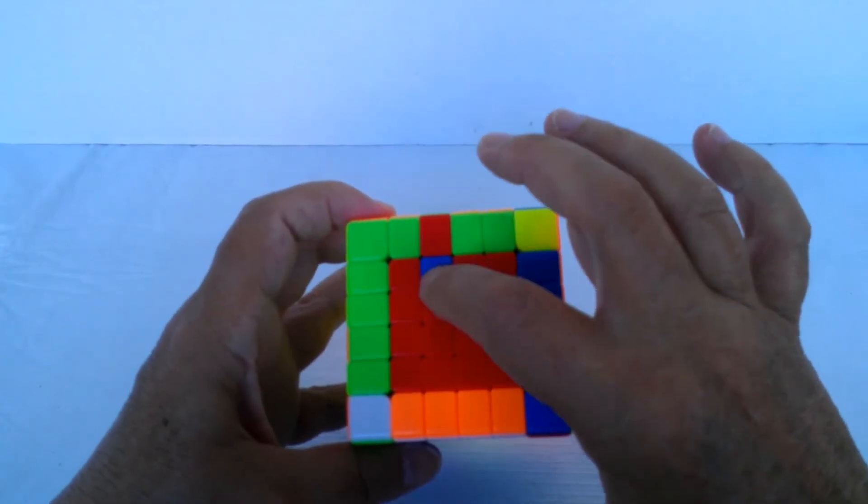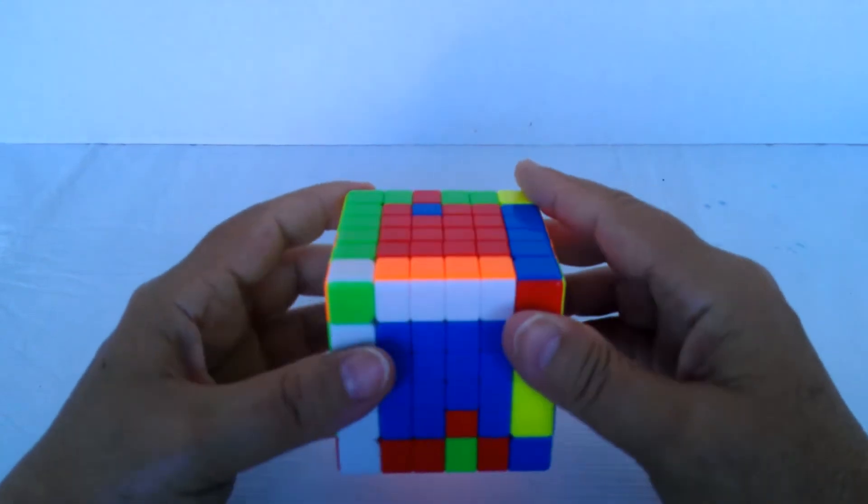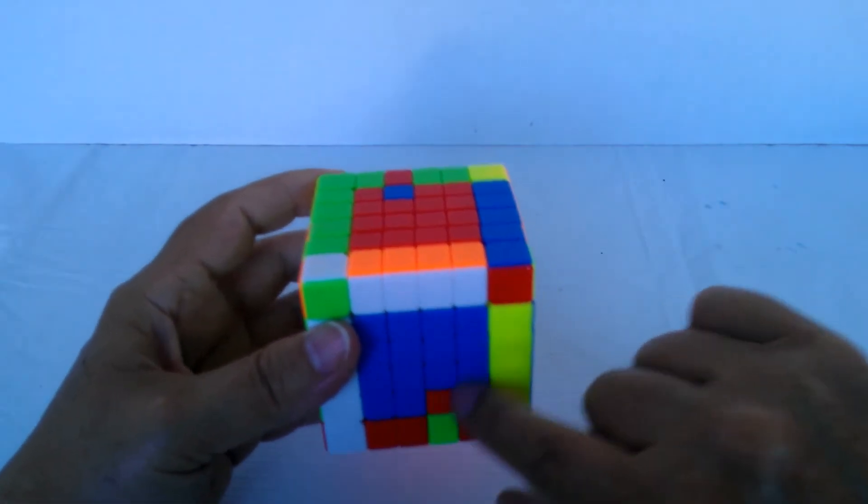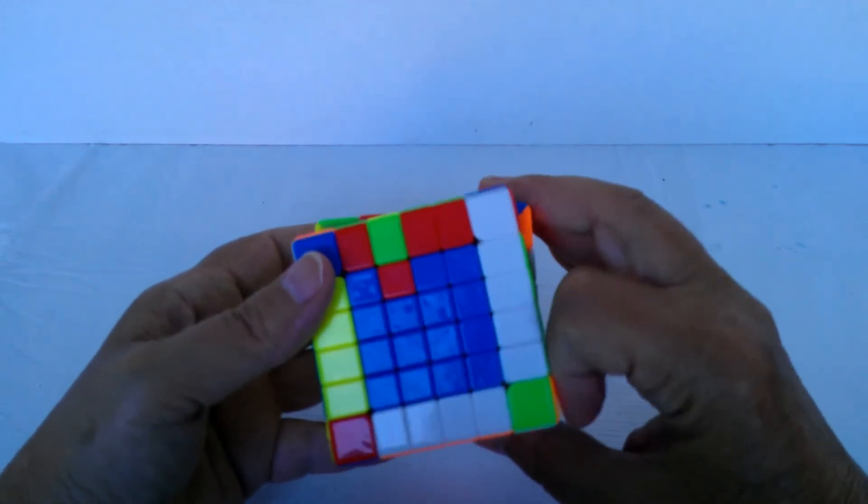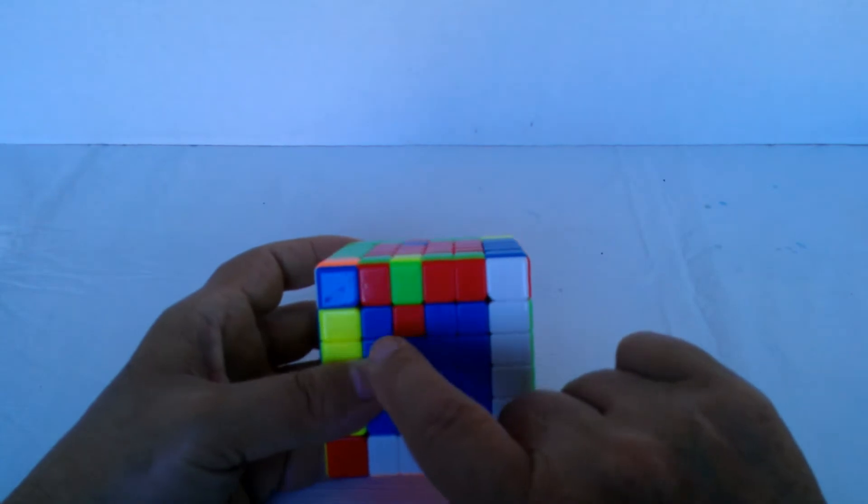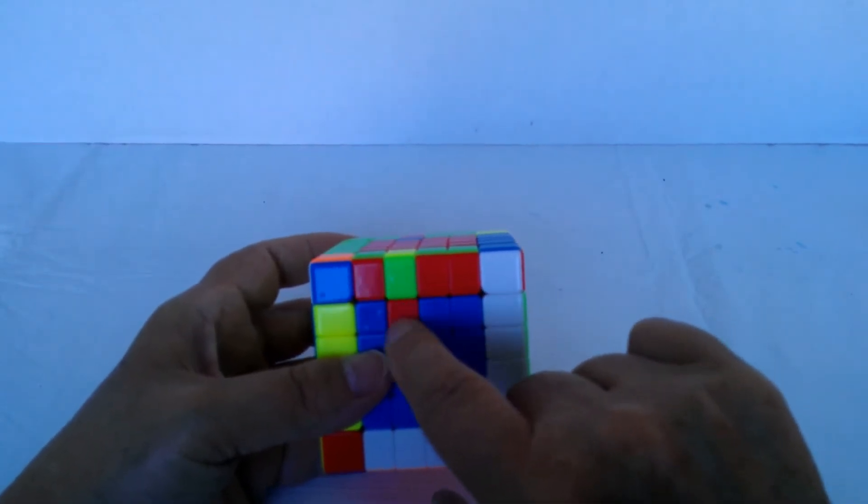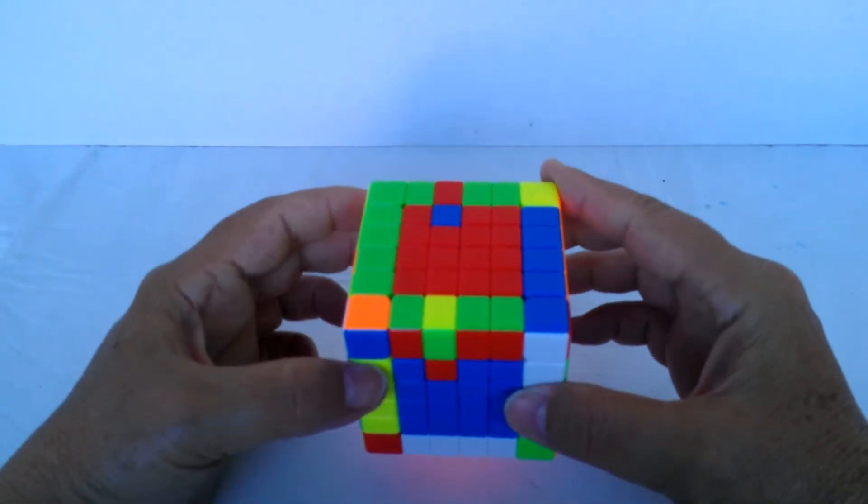The one on the face facing you, orient the face so that it's in the same relative position. So the red one down here is two over on the top, so they're in the same relative position. And then what you do is this series of moves.